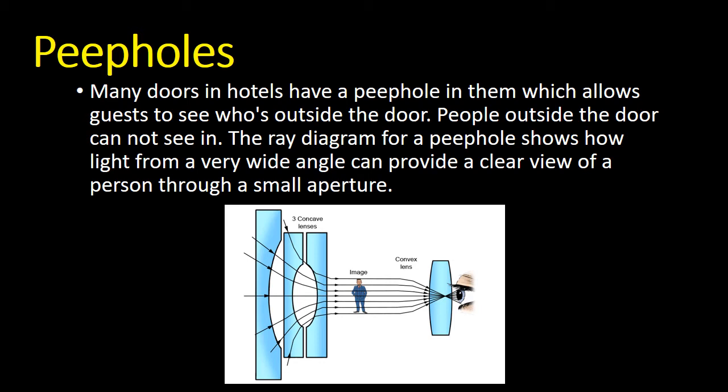The ray diagram for a peephole shows how light from a very wide angle can provide a clear view of a person through a small aperture, as you can see in the picture or the diagram below.